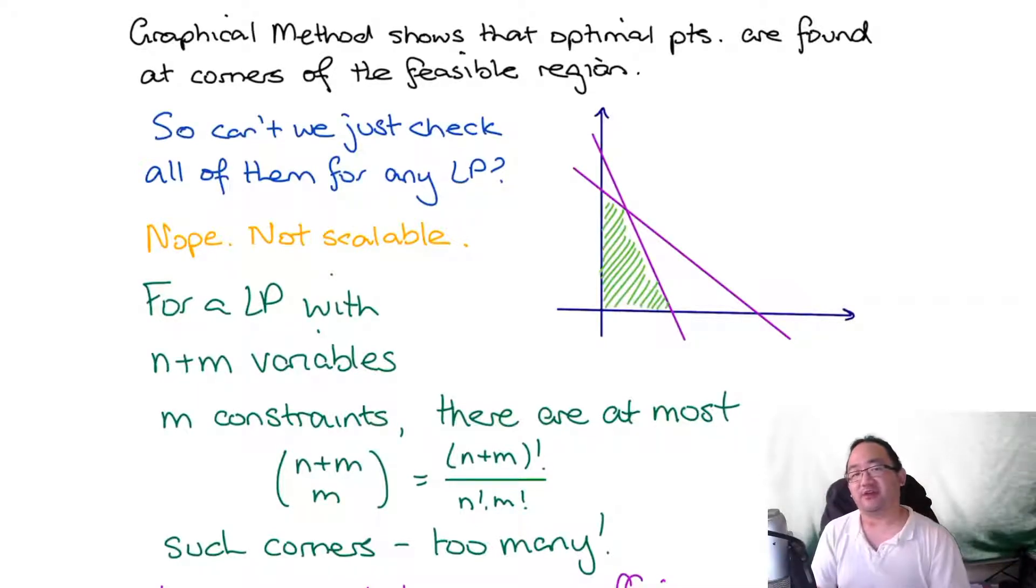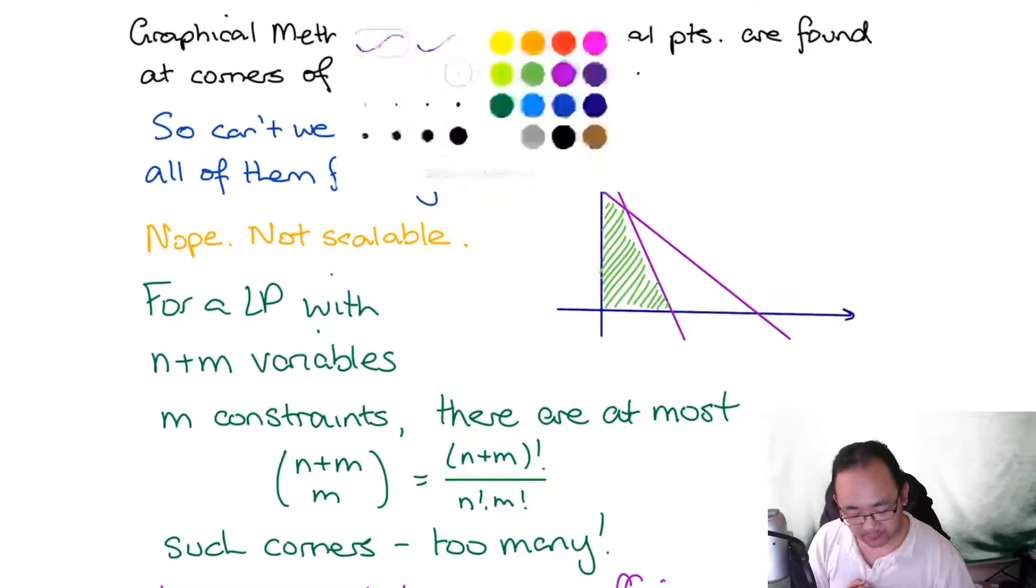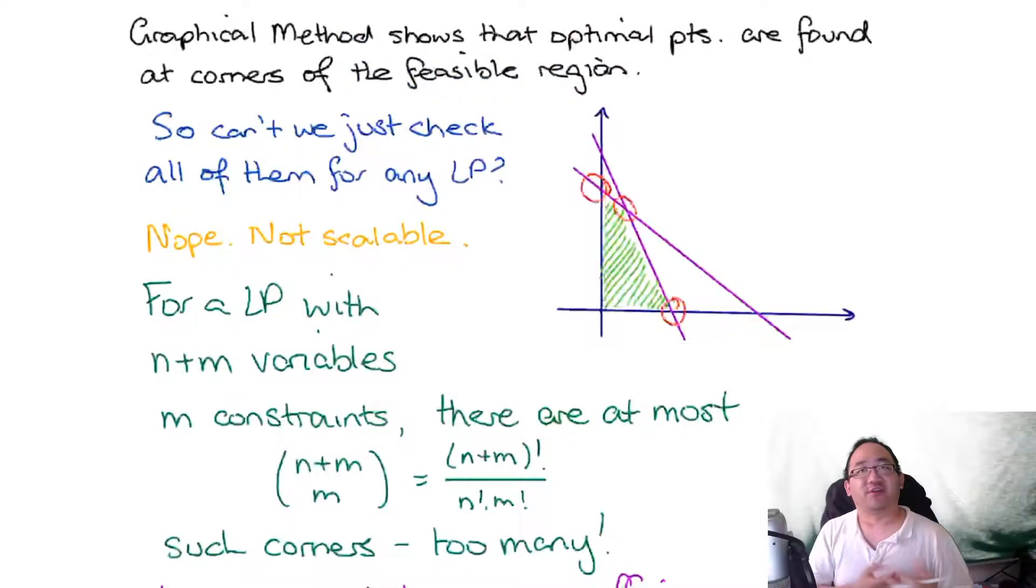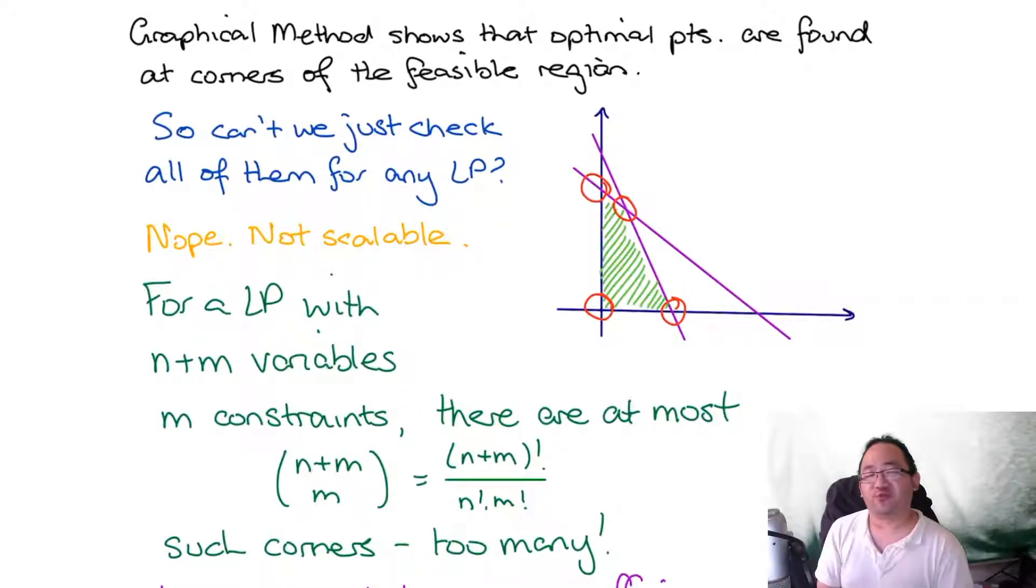Once you've been exploring the graphical method for a while, you will see that any optimal points are found at the corners of the feasible region. I'm assuming you understand the diagram on top where I've drawn a 2D LP as a rough example. Using the graphical method, we find the feasible region, and whether you maximize or minimize, the optimal solution will be found at one of these corners of the feasible region.